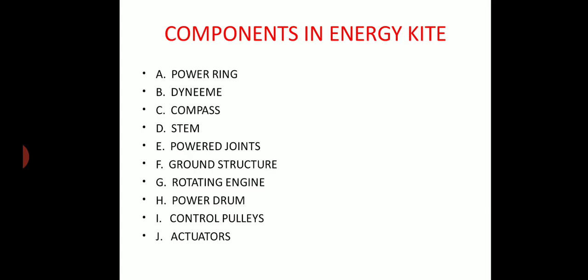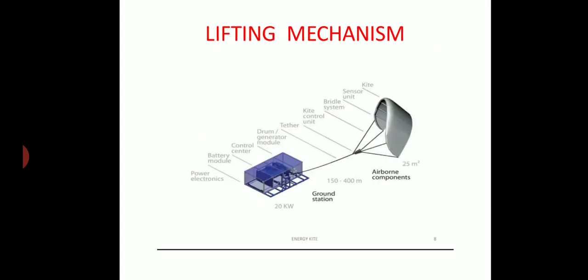Lifting mechanism of kite power generation has two major groups: ground station and air gun components. Ground station consists of power electronics, battery model to store the electricity, a generator, control unit, and drum or generator model. Air gun components include a kite control unit, bridal system, sensor unit, and kite has an area of 25 meter square.